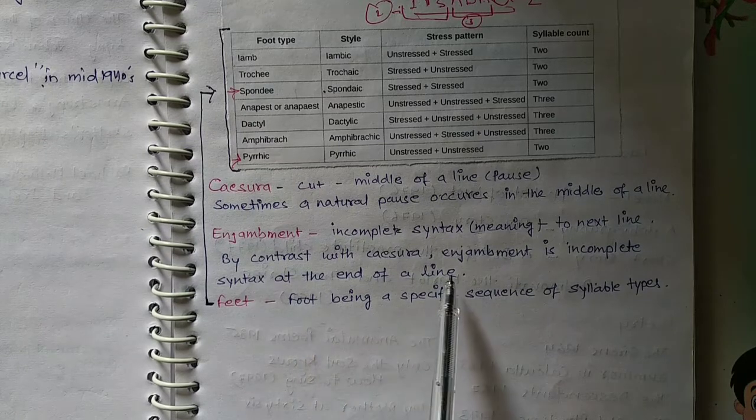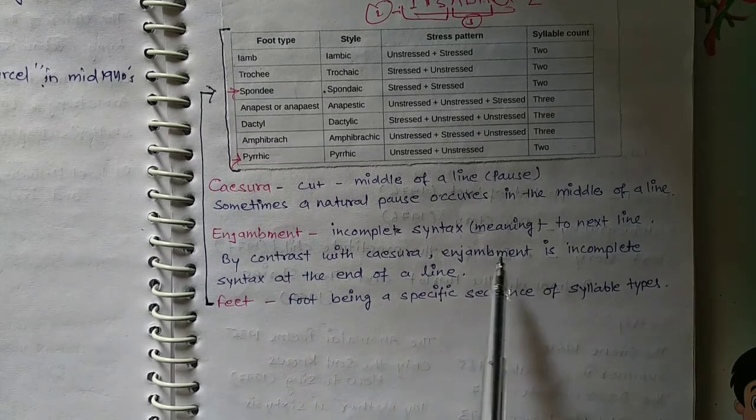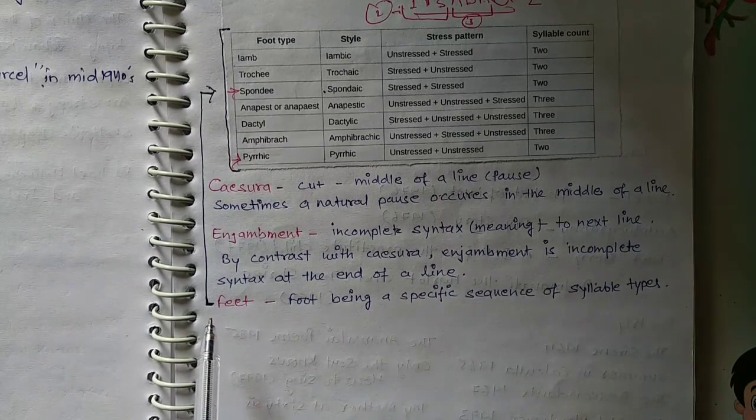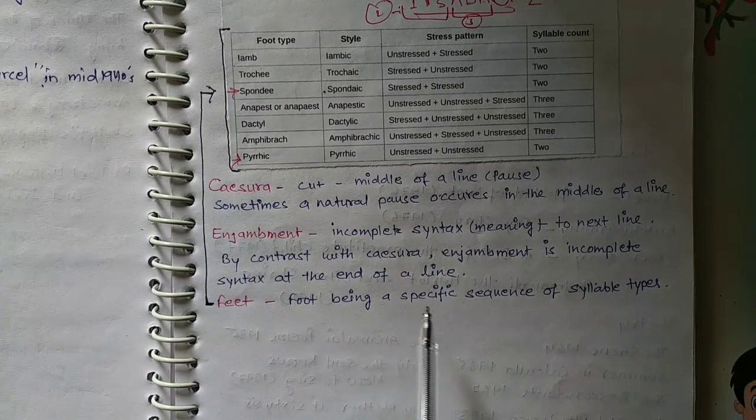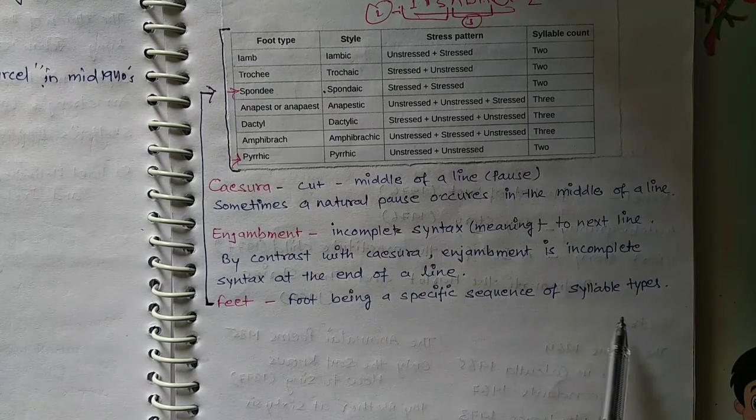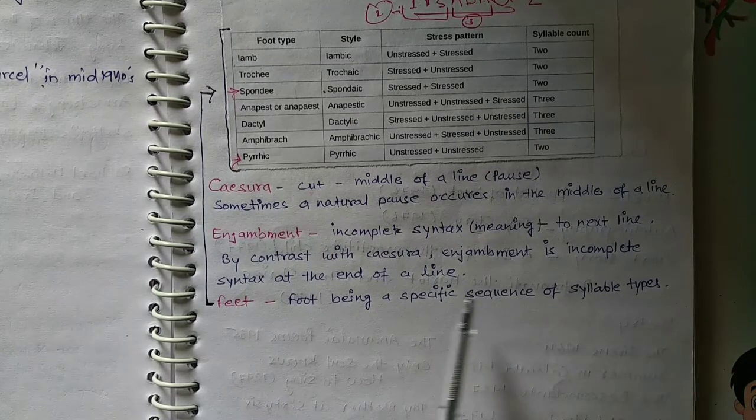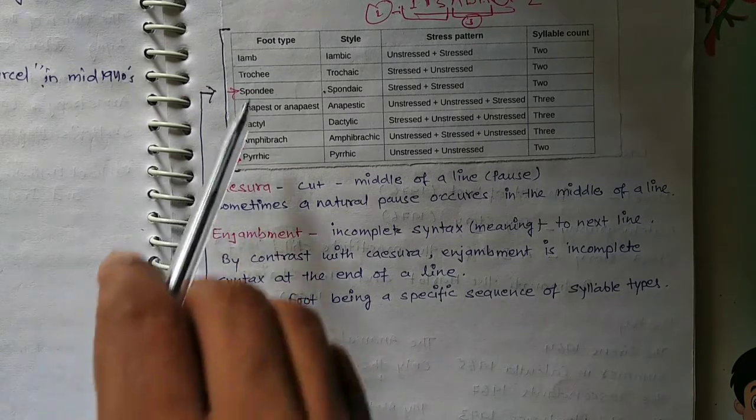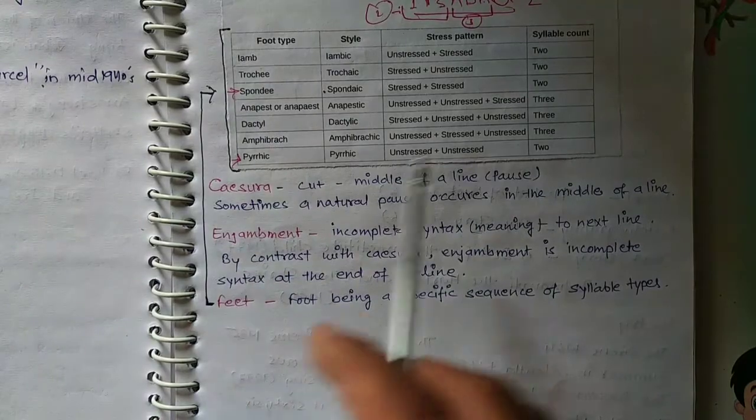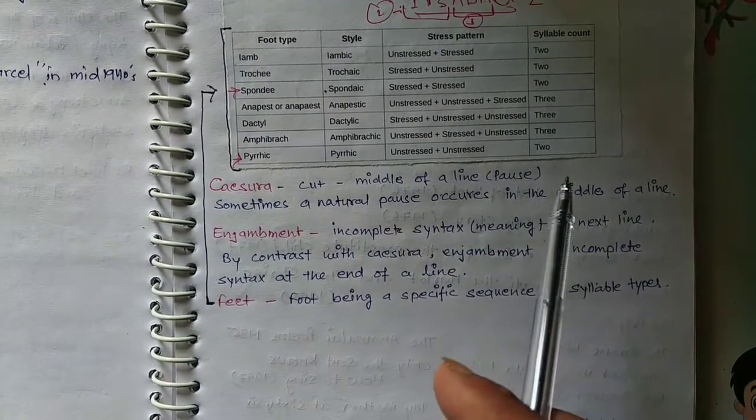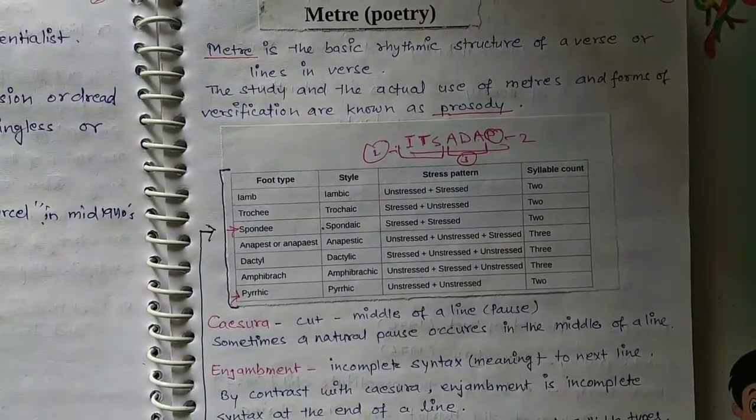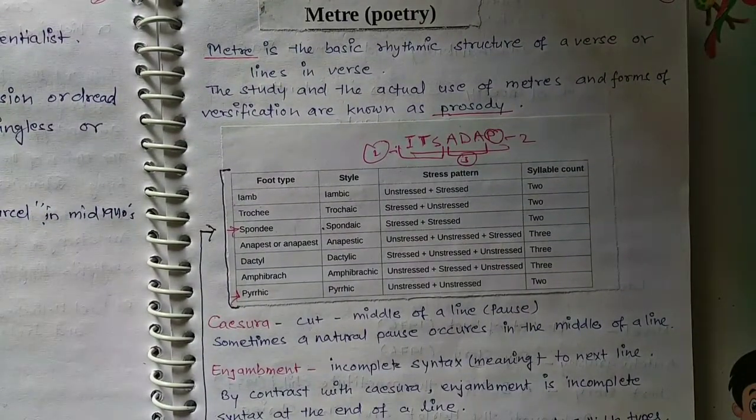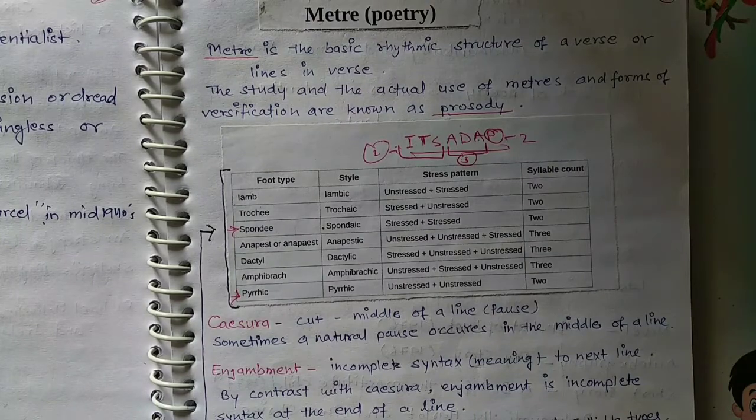And if you want to get example, you must go through. Feet: foot being a specific sequence of a syllabic type. So remember all these terms in order to clear the answers from this part of UKPSC lecturer. Thank you for watching, bye bye, take care, see you next video.